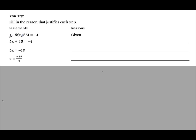When you're given a proof, they'll have statement 1 and whatever they want you to solve — for example, 5x plus 3 equals negative 4, solving for x. The reasons are your properties: distributive, subtraction, addition, and all the properties we discussed. The only new reason is 'given' — the first statement is always given because that's the original equation provided to you.